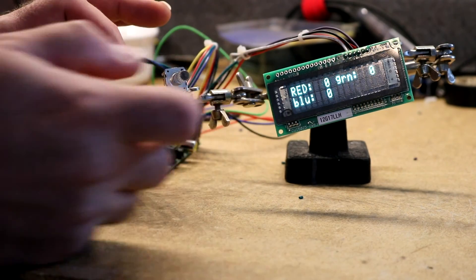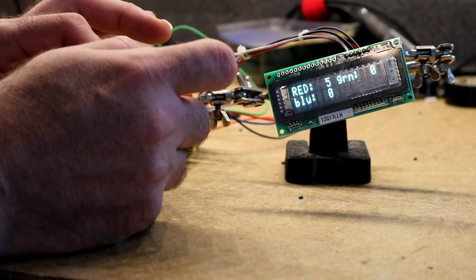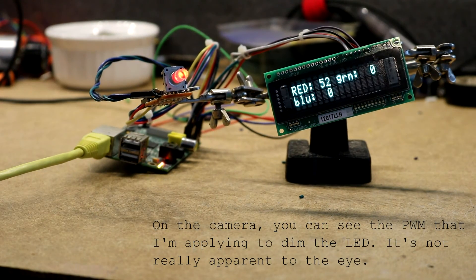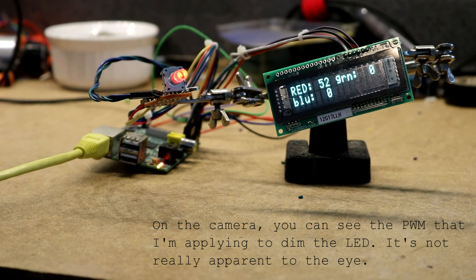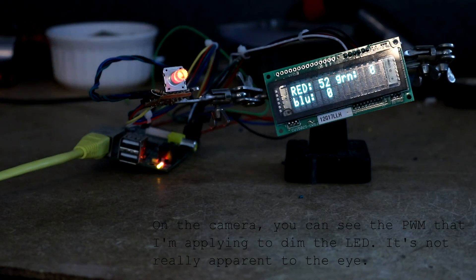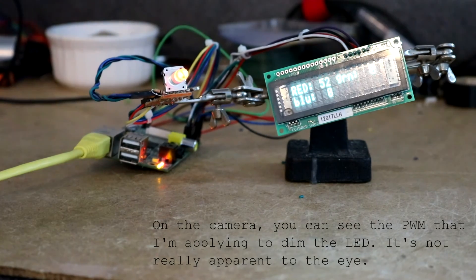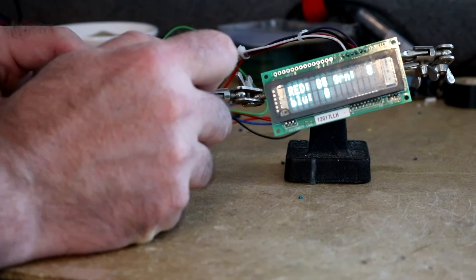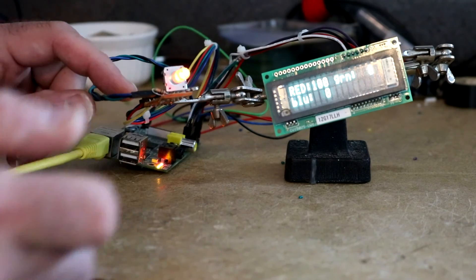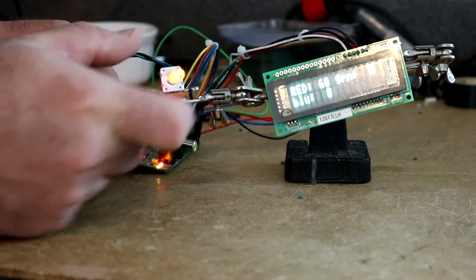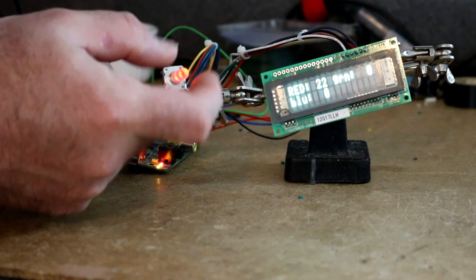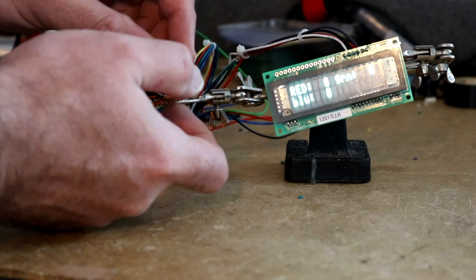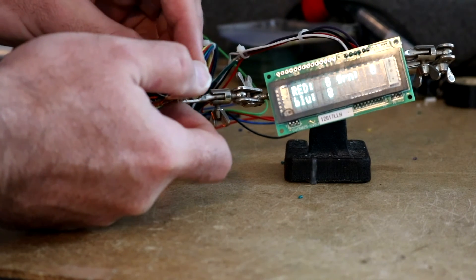The rotary encoder I have hooked up so you can turn it and it will change the color of the encoder. You should be able to see it got reddish. Let me turn out some light. Hopefully we can see that. As I'm turning it up, the red value goes to 100%. Then I can turn the red value back down to zero.